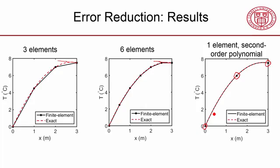And this is a special case where the assumed shape matches the actual shape exactly. And if that's the case, the finite element will match it—it'll give you the right values. And here, with one element, there's no difference between the exact solution and the finite element solution when you go to the second-order interpolation.